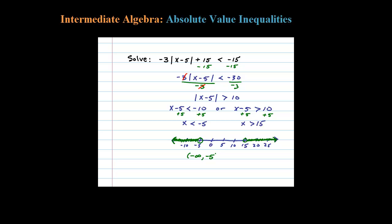Now let's convert to interval notation: from negative infinity to negative 5 with a parenthesis — that's non-inclusive — union parenthesis 15 to infinity. This interval notation represents all the real numbers that solve the original inequality. You should actually test a few values, like 20 or negative 10, to verify. It doesn't hurt to check your answers.